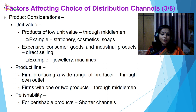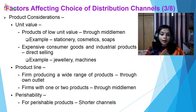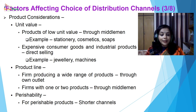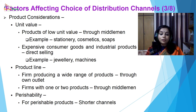The next consideration is product consideration. Channel of distribution also depends upon the type of the product. First, what is the unit value of the product? If the products are of low unit value and of common use, you can use middlemen — for example, stationery, cosmetics, soaps or low-price products can have a longer channel. If the product is expensive consumer goods or industrial products, then a direct channel is used — for example, jewelry or machines. Then product line: if the firm is producing a wide range of products, it is better to open their own outlets; if only one or two products, then through middlemen. Perishability: for perishable products, shorter channels are used.